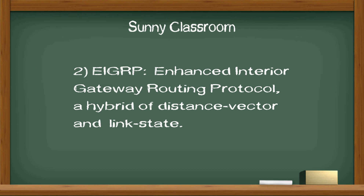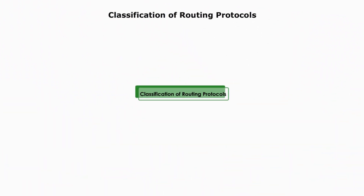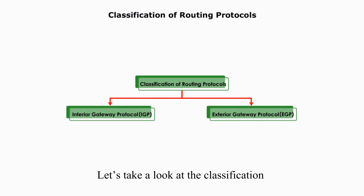EIGRP, Enhanced Interior Gateway Routing Protocol, a hybrid of distance vector and link state. Now let's take a look at the classification of the dynamic routing protocols.